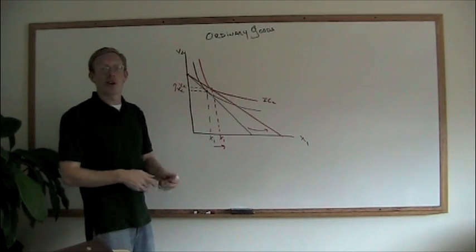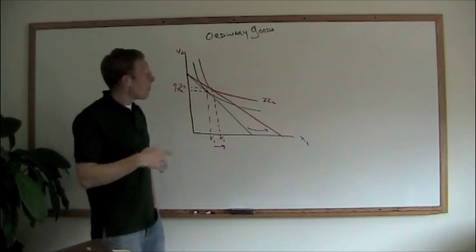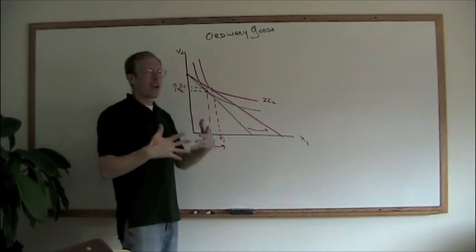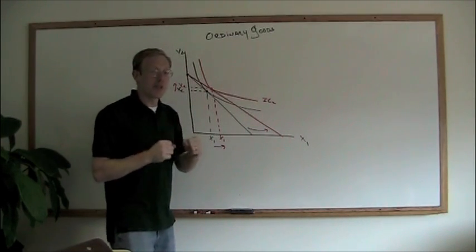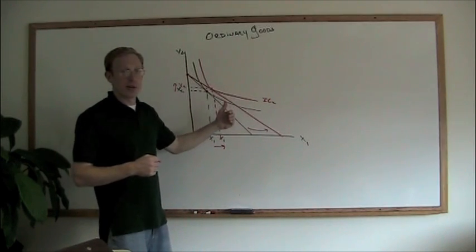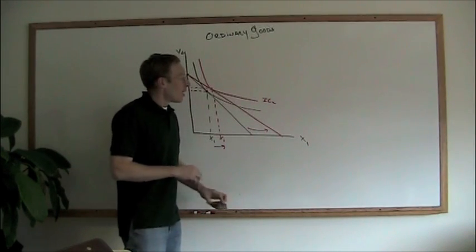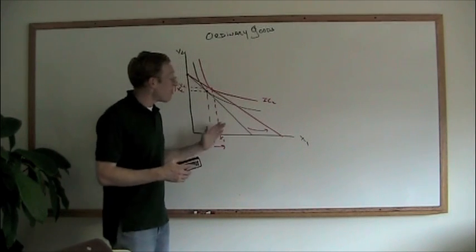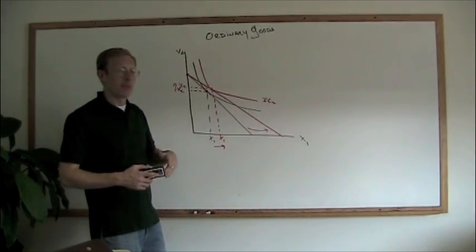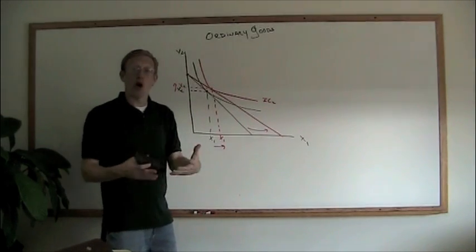That's what happens with an ordinary good. And again, most goods are normal and most goods are ordinary. But there is a very odd and very theoretical notion of something that's not an ordinary good. Remember the definition of ordinary goods. An ordinary good says we'll buy more of a good as the price goes down. This is just the price and that follows the law of demand.